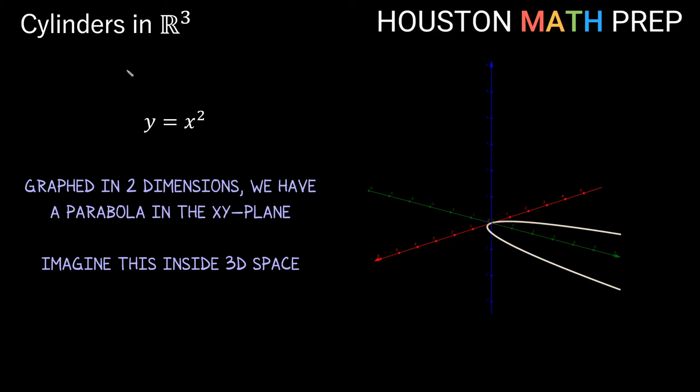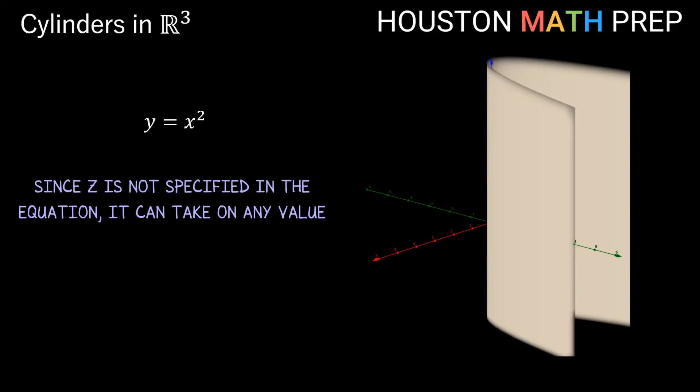We don't really have any restrictions placed on the z value by that formula. Since there are no particular conditions placed on z by this equation, z is allowed to take on any value. So as long as a point still satisfies that y = x², z can be anything.